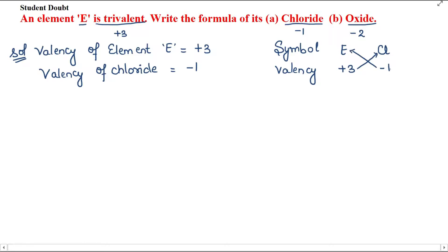Then we cross multiply. We will not mention the sign but we will mention the number which is the valency. The formula will be ECl3.